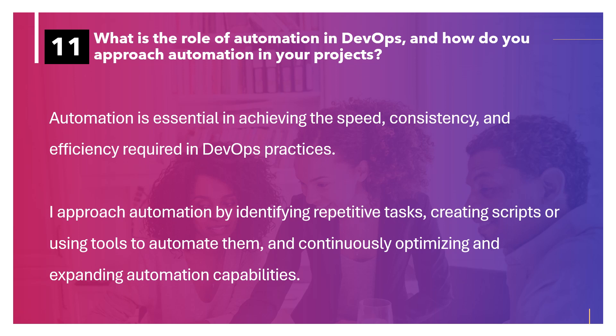What is the role of automation in DevOps and how do you approach automation in your projects? Automation is essential in achieving the speed, consistency, and efficiency required in DevOps practices. I approach automation by identifying repetitive tasks, creating scripts or using tools to automate them, and continuously optimizing and expanding automation capabilities.